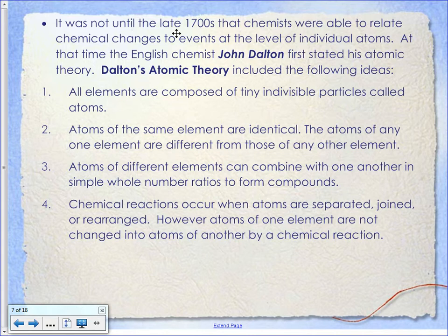John Dalton is the person who came up with the atomic theory, and it starts out with Democritus' idea: all elements are composed of tiny, indivisible particles called atoms. Not invisible — they're very small, but with a powerful enough microscope they would be visible. Indivisible means you can't split them. Now, is that partially true, partially false? Partially true. There's no natural means by which you split an atom, but it can be done artificially. That's how we make nuclear reactors that generate electricity, and it is also how we make nuclear bombs that create destruction.